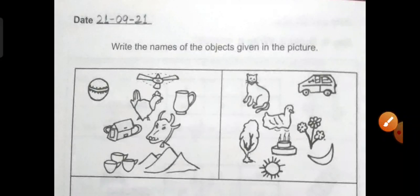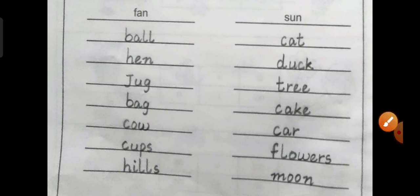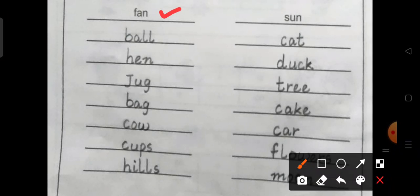Now dear Goenkans, you have to write the names of these objects in the space given below. Fan is written. You have to write the rest of the words now.